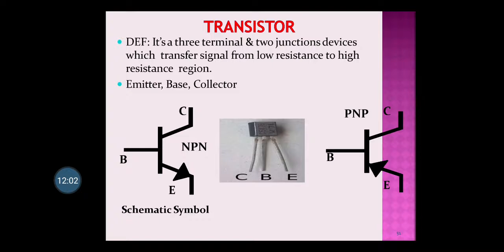The next active component is the transistor — it is a three-terminal device. We will study the transistor in detail in coming chapters, but remember it is a three-terminal device manufactured using semiconductors. When p-type is sandwiched between two n-type semiconductors, an NPN transistor is formed. When n-type is sandwiched between two p-type semiconductors, a PNP transistor is formed. The actual transistor and its symbol are shown here.